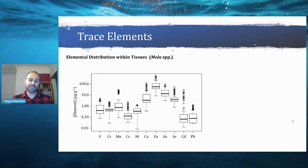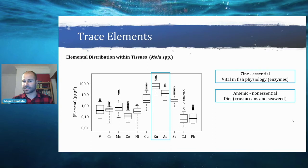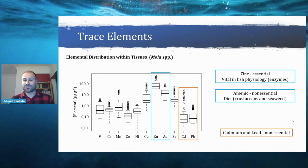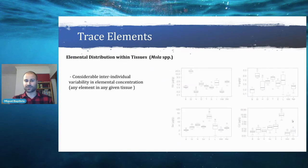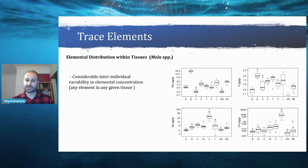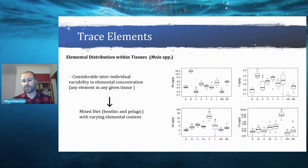In terms of distribution within tissues, the elements in highest concentration overall were zinc and arsenic. Zinc is an essential element vital in fish physiology, involved in many enzymes. Arsenic, though not essential, is found at high levels in fish that consume crustaceans and seaweed — and Mola species consume both. The elements with lowest concentration were cadmium and lead, both non-essential. We found considerable inter-individual variability in elemental concentration; for any element in any given tissue, there was a large variation, likely due to their mixed diet of planktonic and pelagic prey.